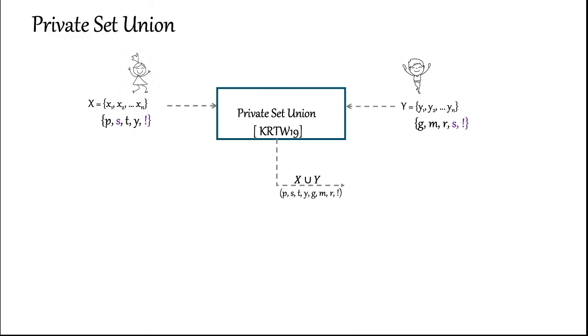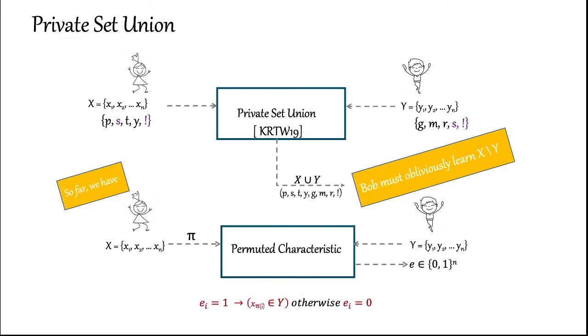Next, we are ready to see how we can compute the private set union using our PC protocol. The goal of private set union is that, if Alice has a set x and Bob has a set y, then Bob can learn x union y as shown in the example. We can restate this goal as, Bob needs to learn all of Alice's items that are outside his set. So far, what we have is the permuted characteristic functionality. This gives Bob an indicator vector e as output. This vector has value 0 in all positions where Alice has an item that is outside of Bob's set. So, Bob must somehow obtain these values.